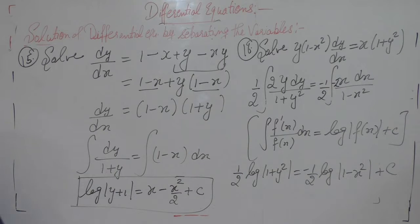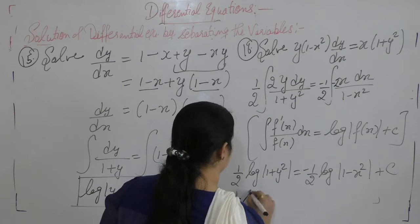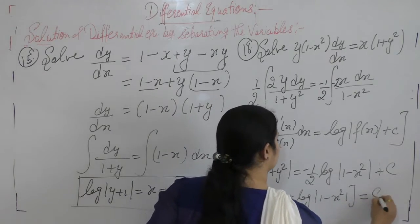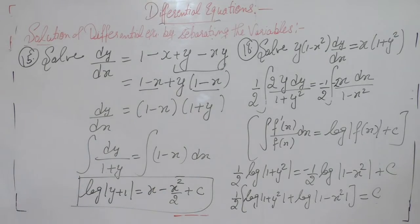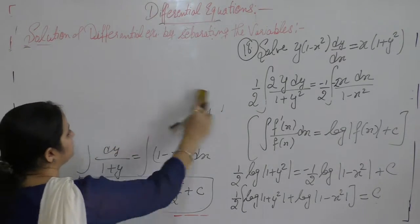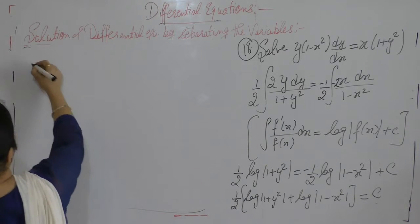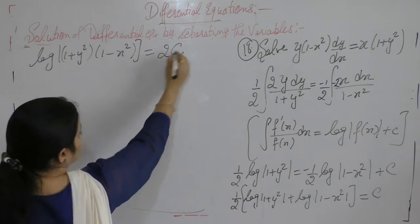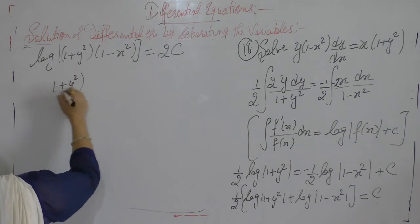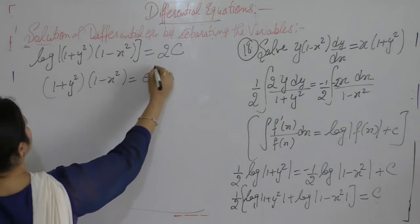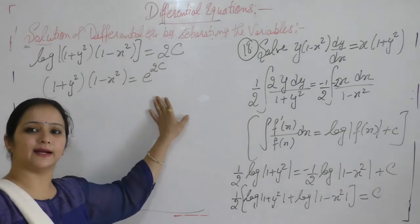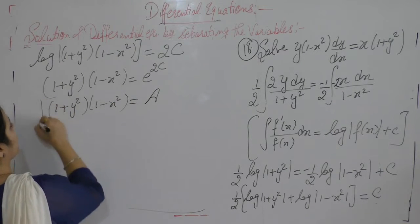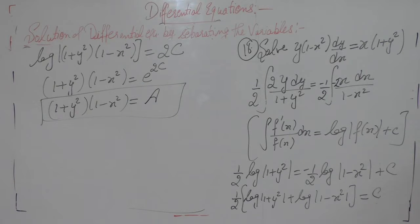Taking the log(1 − x²) term to the left-hand side: 1/2 common — log(1 + y²) + log(1 − x²) = c. Using the identity log a + log b = log(ab): log[(1 + y²)(1 − x²)] = 2c. So (1 + y²)(1 − x²) = e^(2c), which is some other constant, say a. Therefore, (1 + y²)(1 − x²) = a.